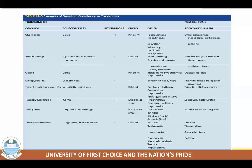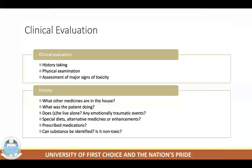These symptom complexes may give clues to an unknown poisoning. For example, a patient with a history of depression presenting with coma, seizures, widened QRS complex or evidence of dysrhythmia on ECG, and dilated pupils has likely taken a tricyclic antidepressant overdose. Hepatic, renal, respiratory, and hematologic disturbances are generally delayed manifestations of poisoning.